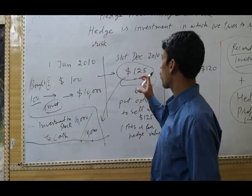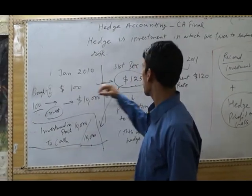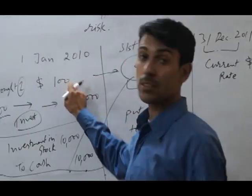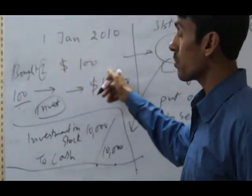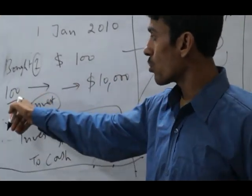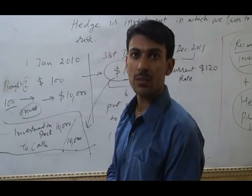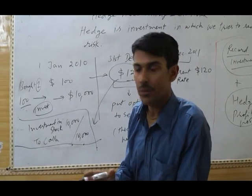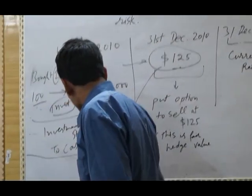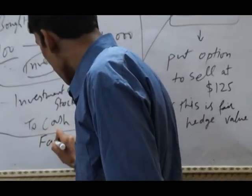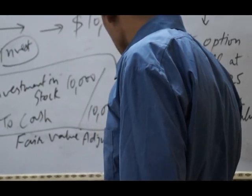We also record the income and loss in this investment. The difference between 125 and 100 is 25 — we have earned money on our $100 investment. If we invest $100 in 100 shares, we will earn $2,500. This is not a real earning because we did not sell; it is just an idea, so we write it as a fair value adjustment account debit.